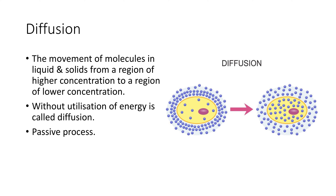Diffusion. The movement of molecules in liquid or solids from a region of higher concentration to a region of lower concentration without utilization of energy is called diffusion. Energy is not needed for diffusion, so this is a passive process. The movement of molecules goes from higher concentration to lower concentration. An example is a drop of food coloring diffusing throughout the water.